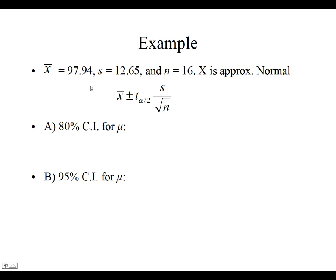So, this is the formula that we're going to use. Now, we're going to be able to plug in the 97.94 for x-bar, the 12.65 for s, and 16 for n, but we need to calculate this t of alpha over 2.